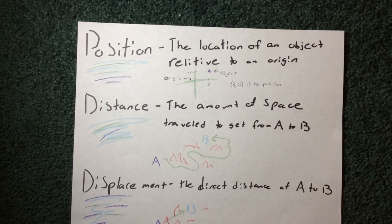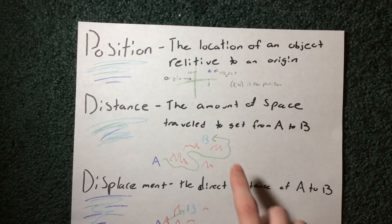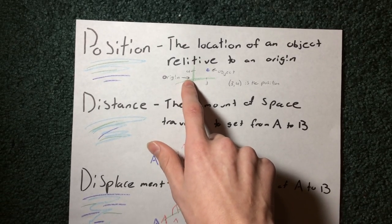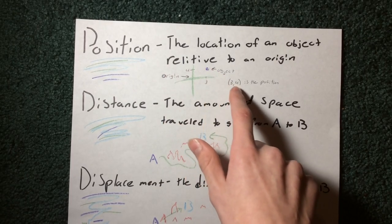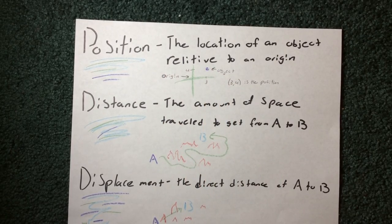Position is the location of an object relative to an origin. On my little drawing here, this would be the origin, and so you'd be like over 3, up 4 to this object, so the position would be 3, 4.